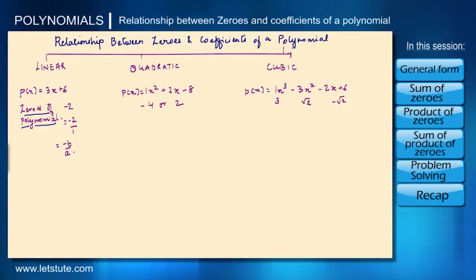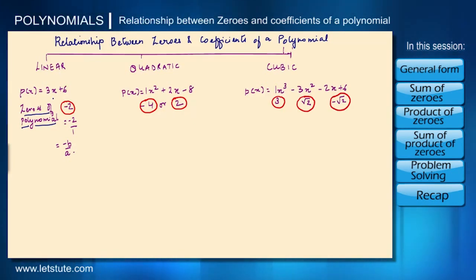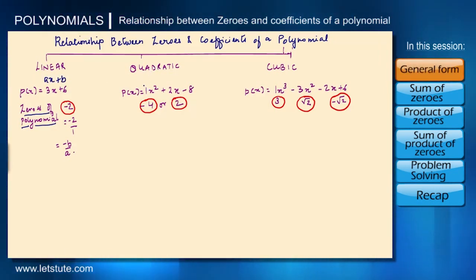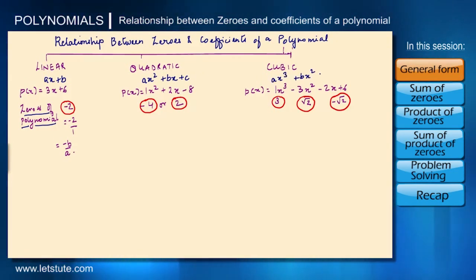Here I have listed down the zeros of the polynomial for each type: linear, quadratic, and cubic. The general form for a linear polynomial is ax plus b. For a quadratic polynomial it is ax squared plus bx plus c. And for a cubic polynomial it is ax cubed plus bx squared plus cx plus d.